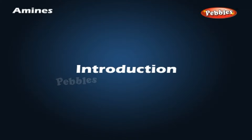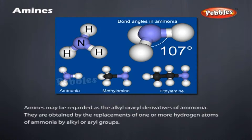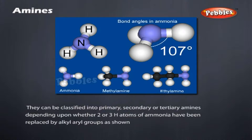Amines. Introduction: Amines may be regarded as the alkyl or aryl derivatives of ammonia. They are obtained by the replacement of one or more hydrogen atoms of ammonia by alkyl or aryl groups. They can be classified into primary, secondary, or tertiary amines depending upon whether one, two, or three H atoms of ammonia have been replaced by alkyl or aryl groups, as shown.